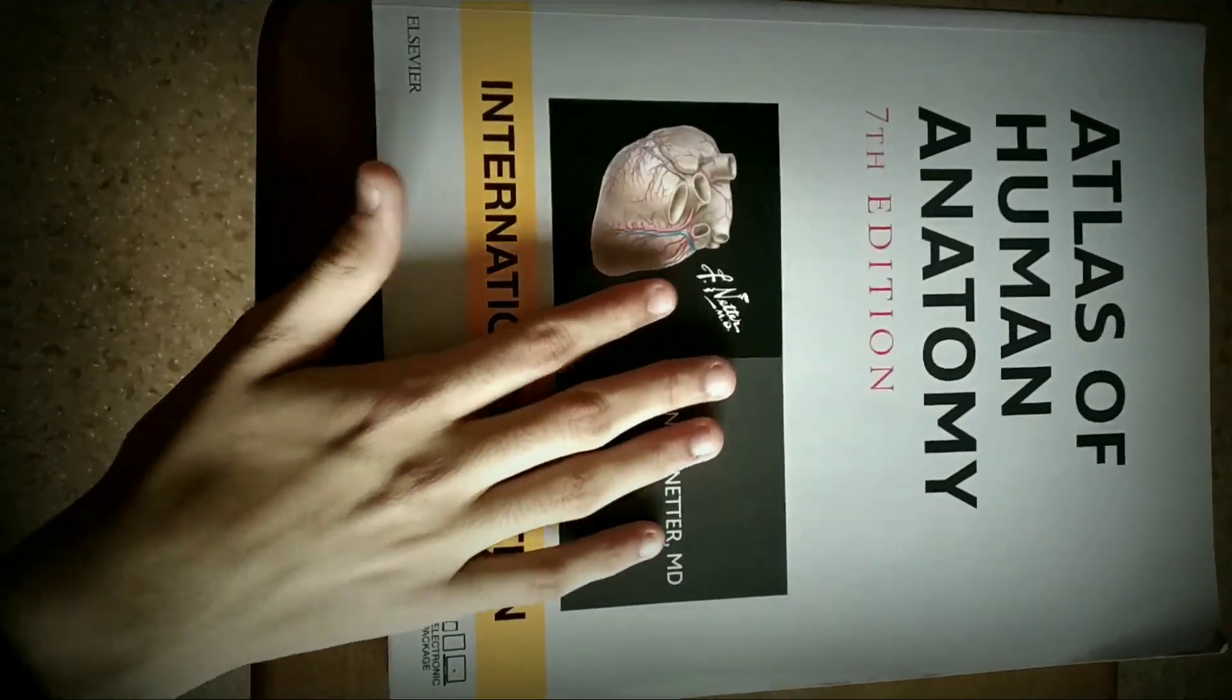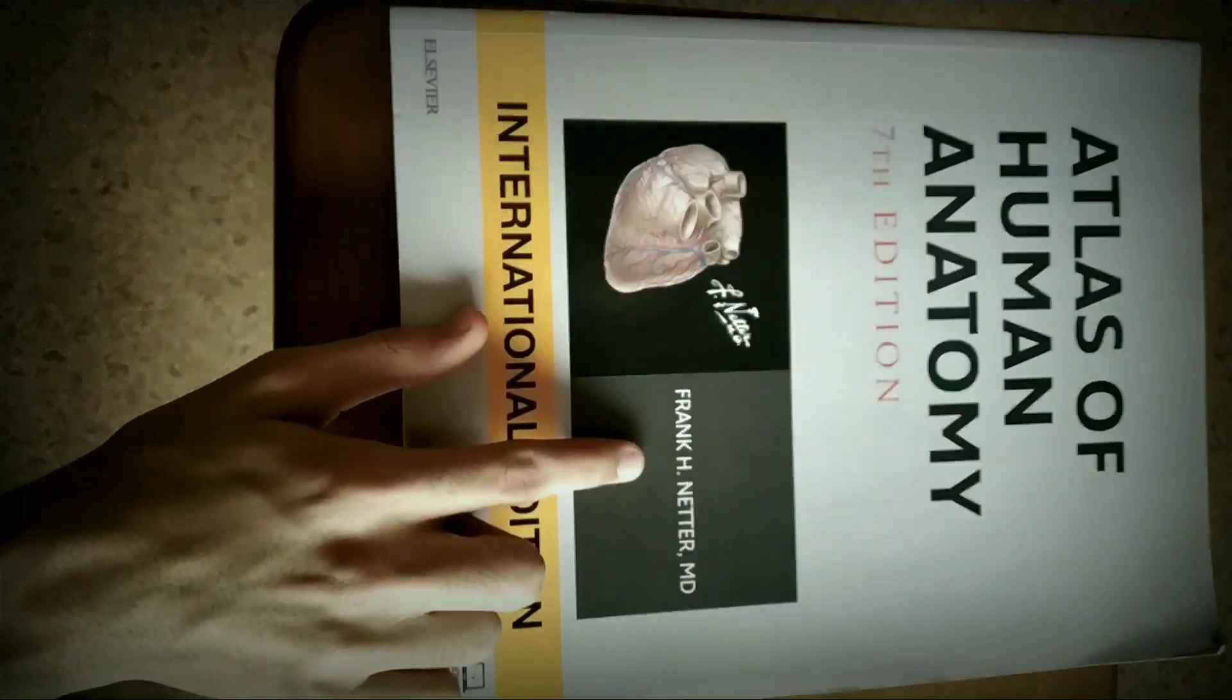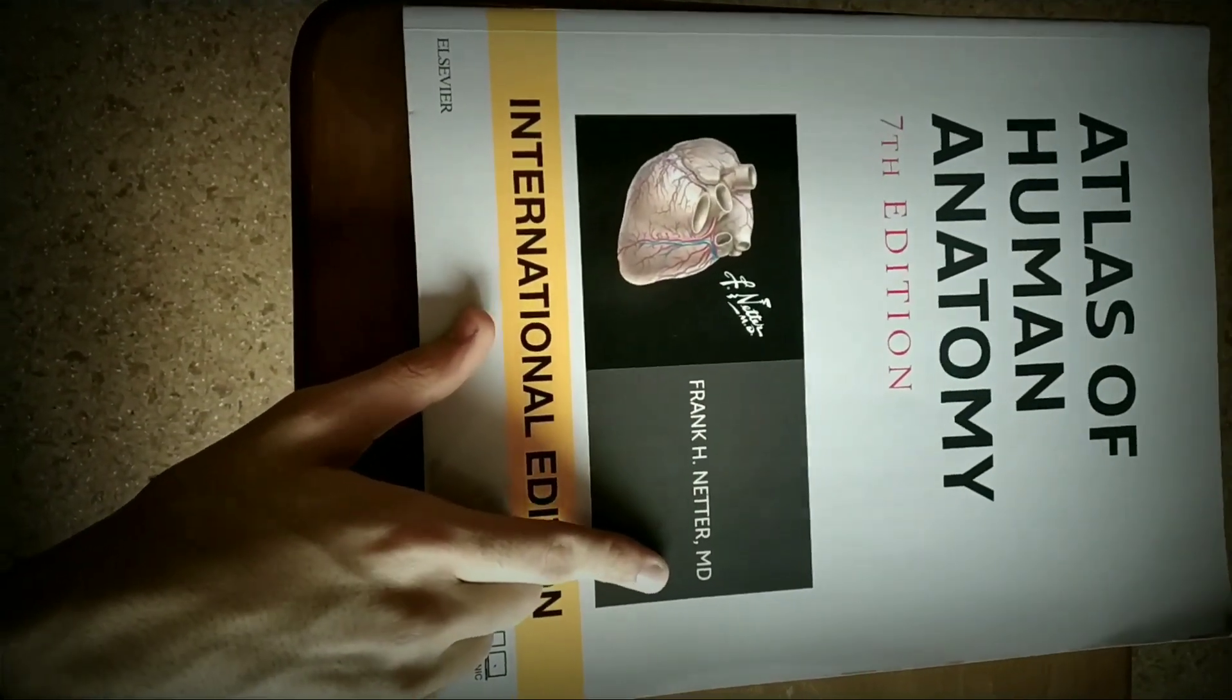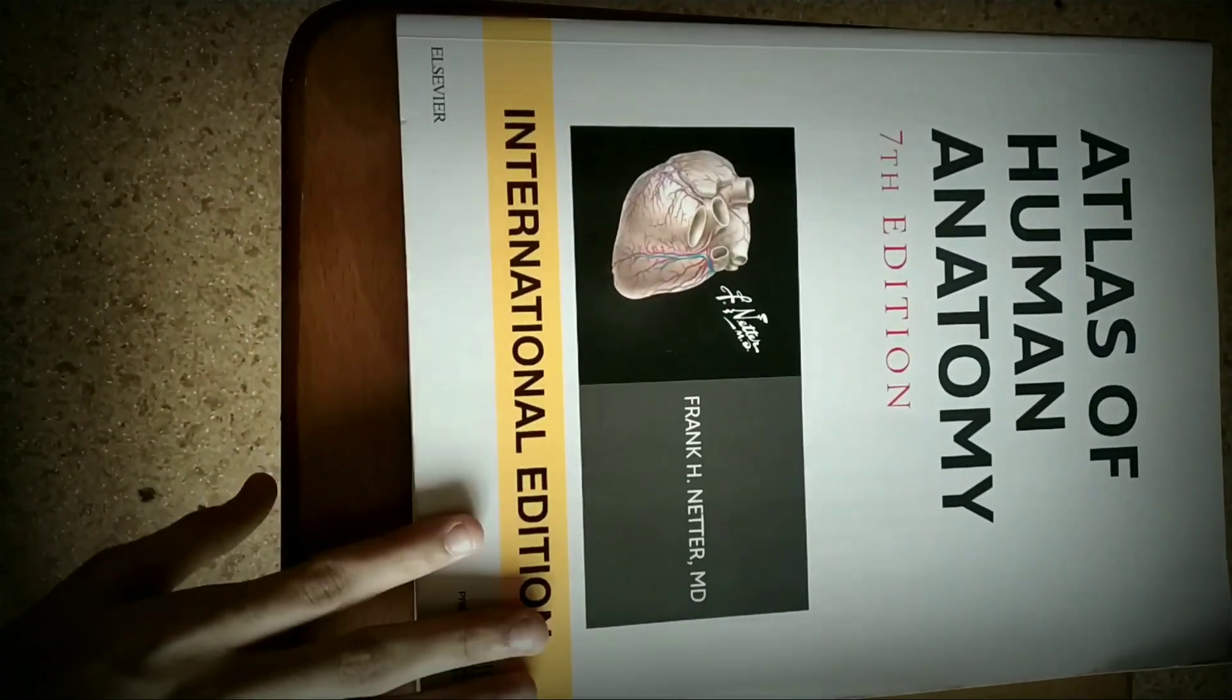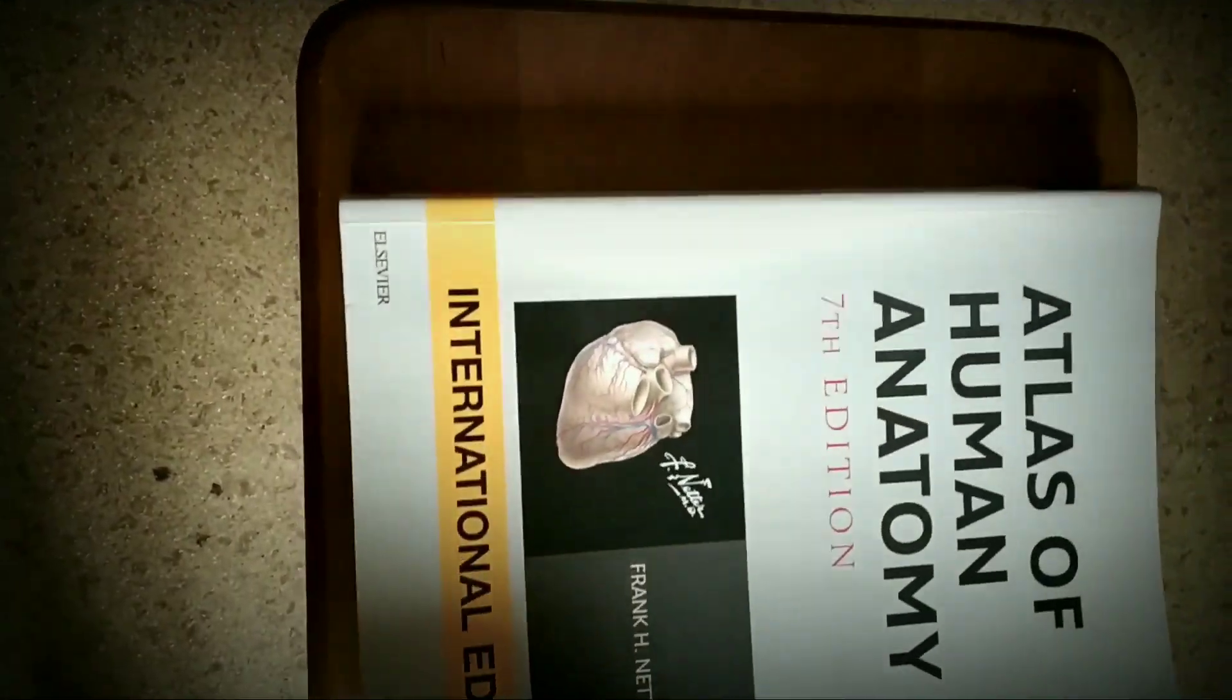So guys, this is our book, this is Atlas of Human Anatomy 7th Edition by Frank H. Netter MD. This is the book and this is the front view of this human atlas. So let's open this book.